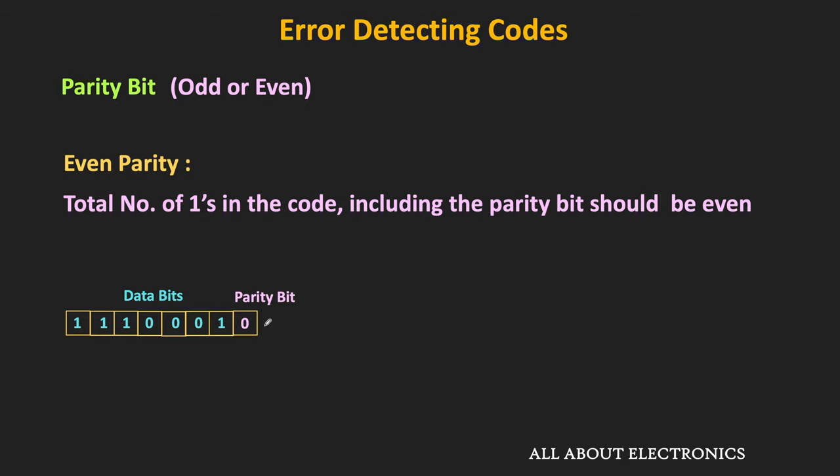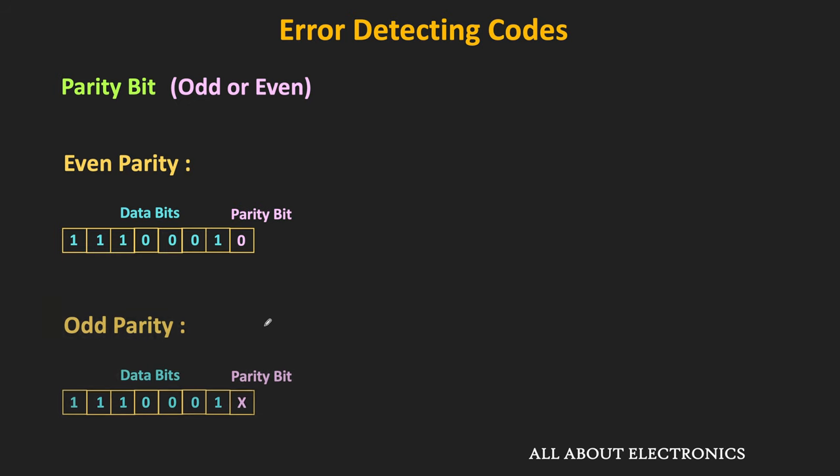On the other hand, if we use odd parity, then for the same data bits, this parity bit should be equal to 1, so that the total number of 1s in the code remains odd. For error detection, the parity bit is appended along with the data bits and the entire code will be sent from the transmitter side to the receiver side.